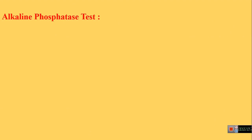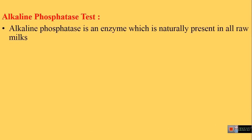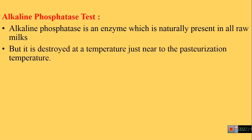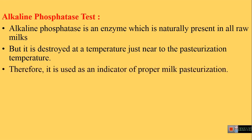The alkaline phosphatase is an enzyme that is naturally present in all raw milks and this enzyme gets destroyed at a temperature just near to the pasteurization temperature. Therefore, this enzyme is used as an indicator of proper milk pasteurization.